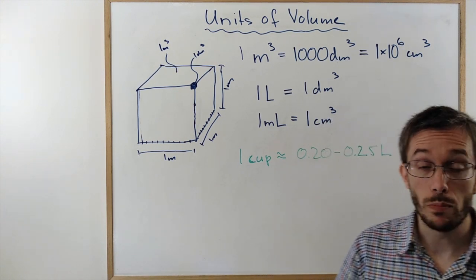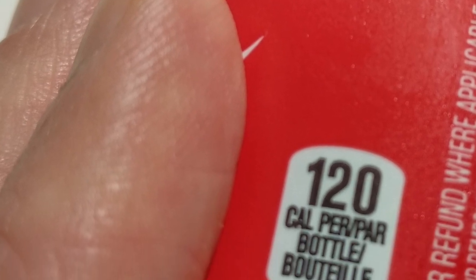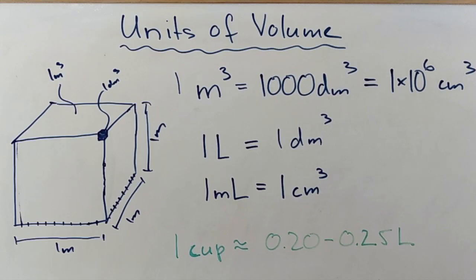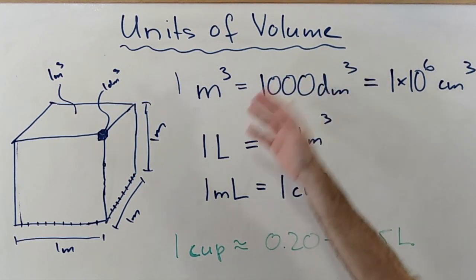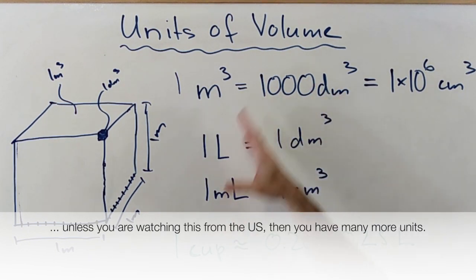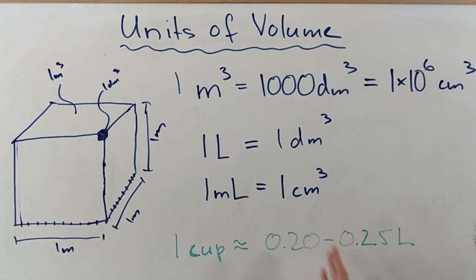You could also use a bottle of some soda that you bought. Usually they're also telling you exactly the volume that's in there. There are many more units, but I think these are the most common ones that you will encounter. And these are some that you can maybe use if you're in the kitchen and you try to measure something.